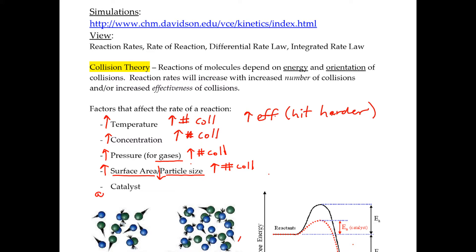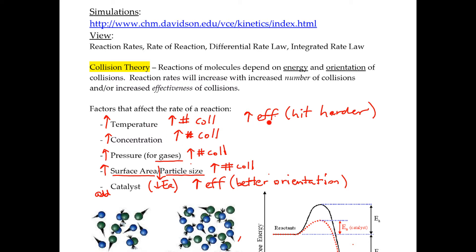Lastly, you want to add a catalyst to increase the rate. When you add a catalyst, that's going to lower the activation energy, and when you lower the activation energy you're going to increase the effectiveness of the collisions because you're going to have a better orientation anytime they collide due to the presence of the catalyst. So this is the only factor that affects only effectiveness, whereas surface area, pressure, and concentration affect only the number of collisions, and temperature increases both the number of collisions and the effectiveness.